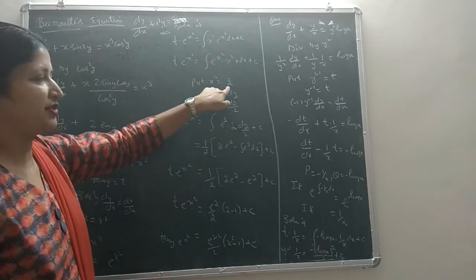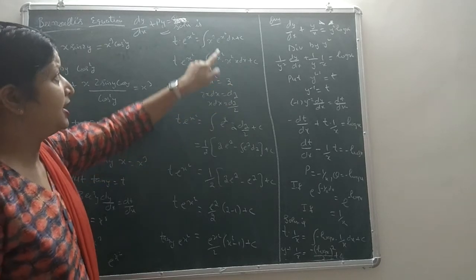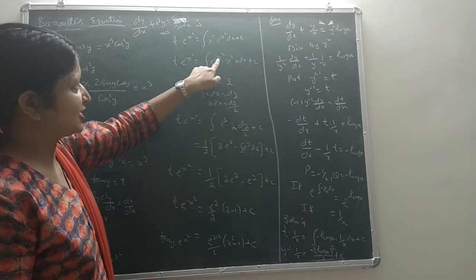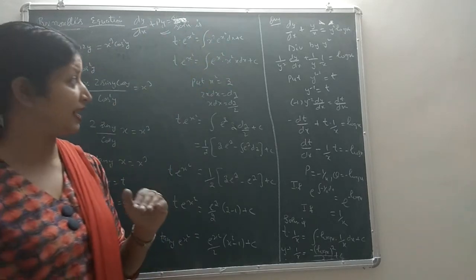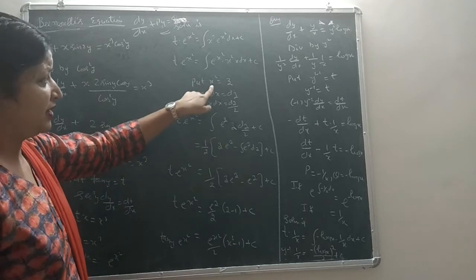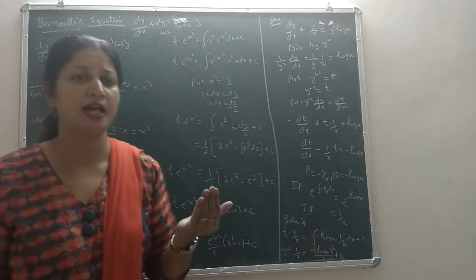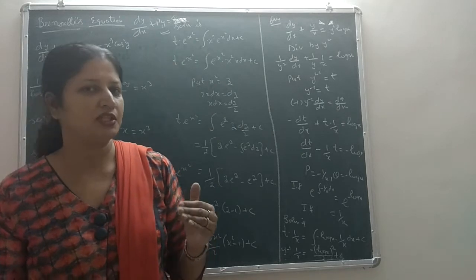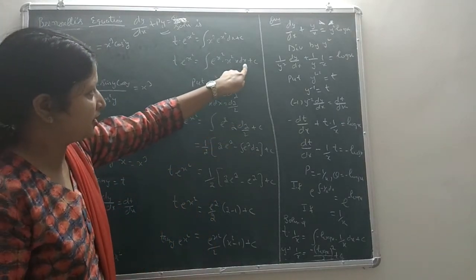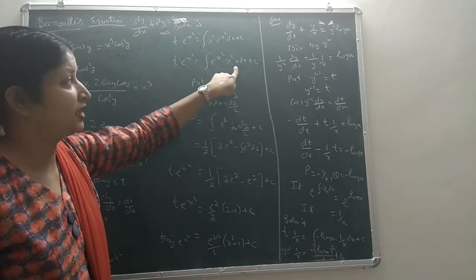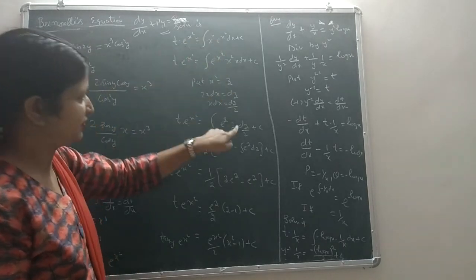To evaluate the integral of x³·e^(x²) dx, we substitute x² = z, so x dx = dz, and x³ dx = z·dz. The integral becomes the integral of z·e^z dz.